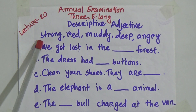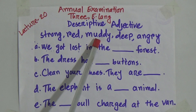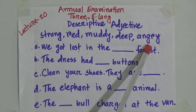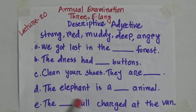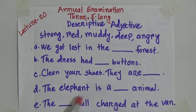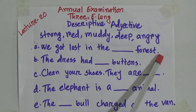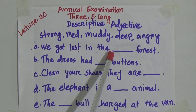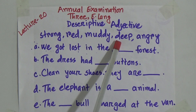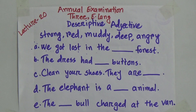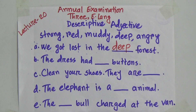So there are also some options: Strong, Red, Muddy, Deep, Angry. By using these options, you will have to fill up these sentences. First sentence is: we got lost in the gap forest. We got lost in what kind of forest? Strong, red, muddy, deep, or angry? Here it would be deep — deep forest.